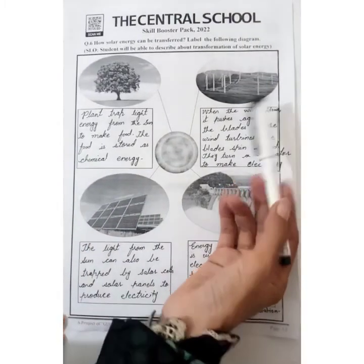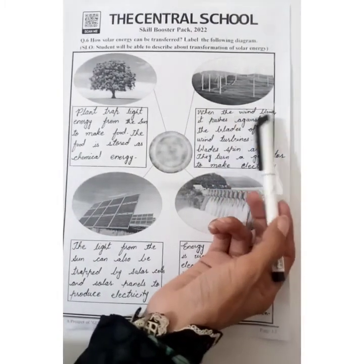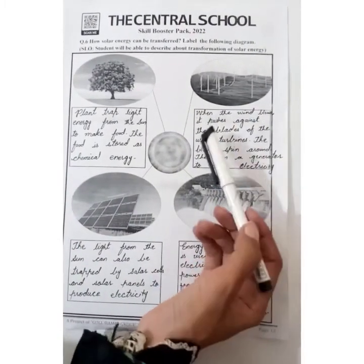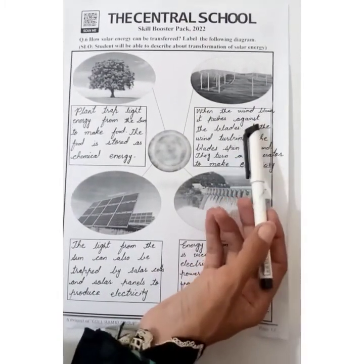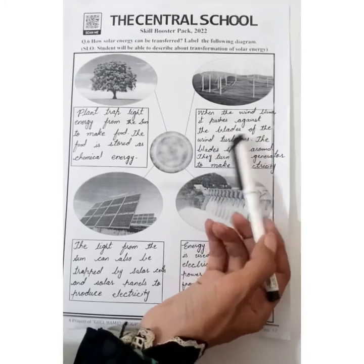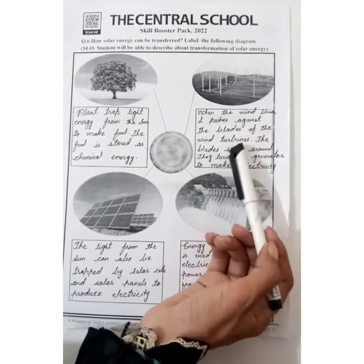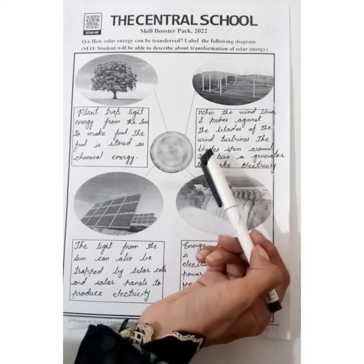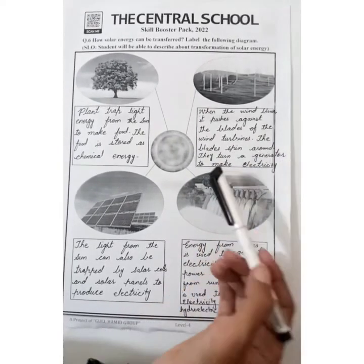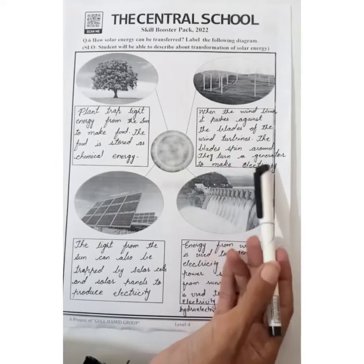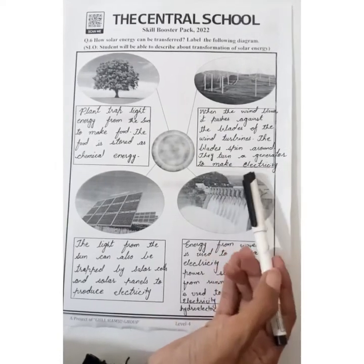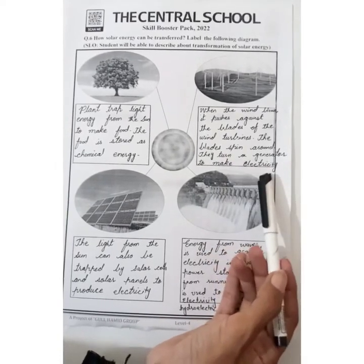This is wind turbines. When the wind blows, it pushes against the blades of the wind turbines. The blades spin around and turn a generator to make electricity.